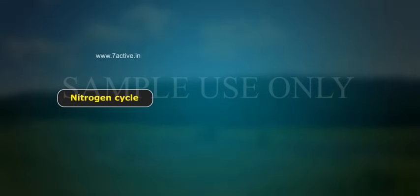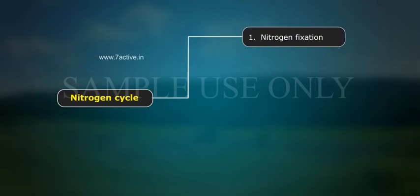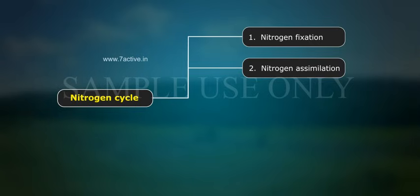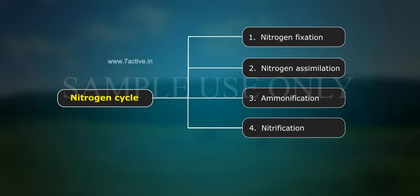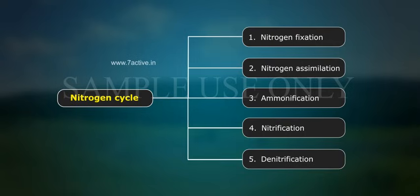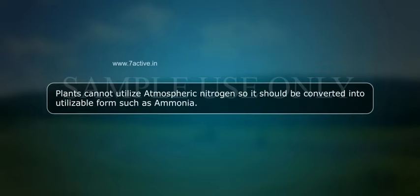The nitrogen cycle involves various steps: 1. Nitrogen fixation, 2. Nitrogen assimilation, 3. Ammonification, 4. Nitrification, 5. Denitrification. Plants cannot utilize atmospheric nitrogen, so it should be converted into a utilizable form, such as ammonia.